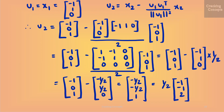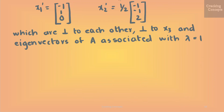We use the equations for u1 and u2, where u1 = x1 = [−1, 1, 0] and u2 = x2 − (u1^T x2 / ‖u1‖²) u1. Substituting the values, we get u2. Now we have x1' and x2' which are orthogonal to each other, orthogonal to x3, and eigenvectors of A associated with λ = 1.